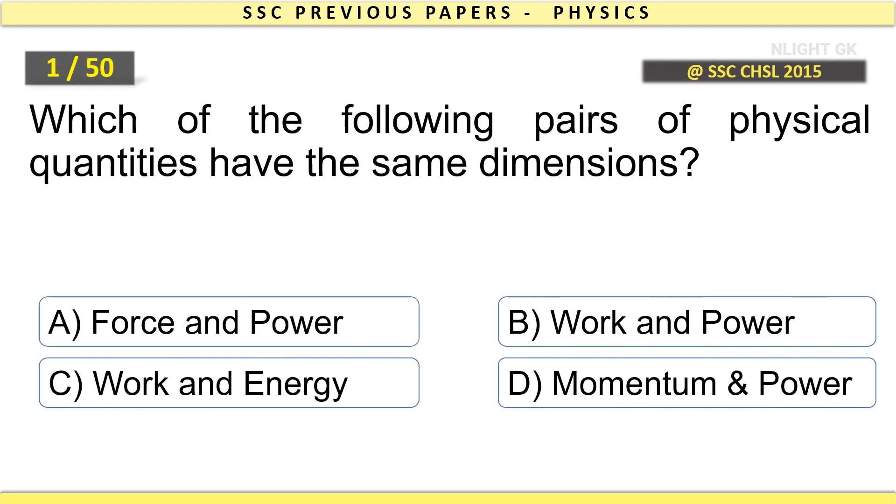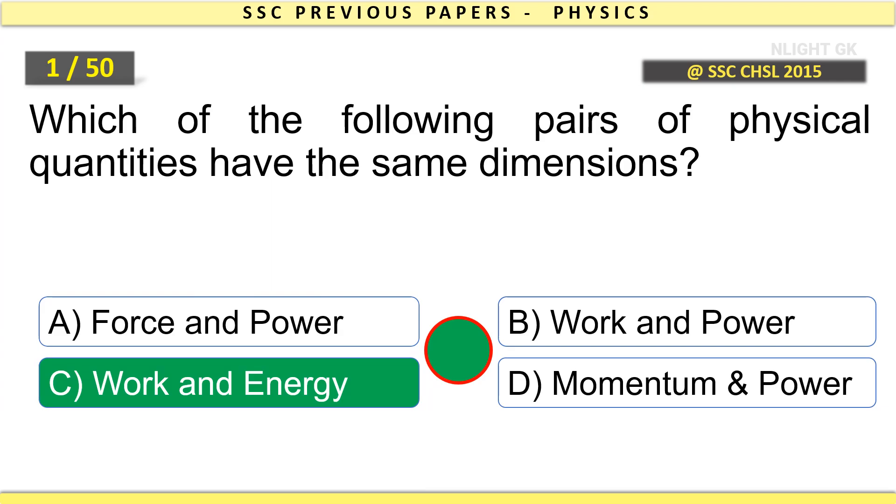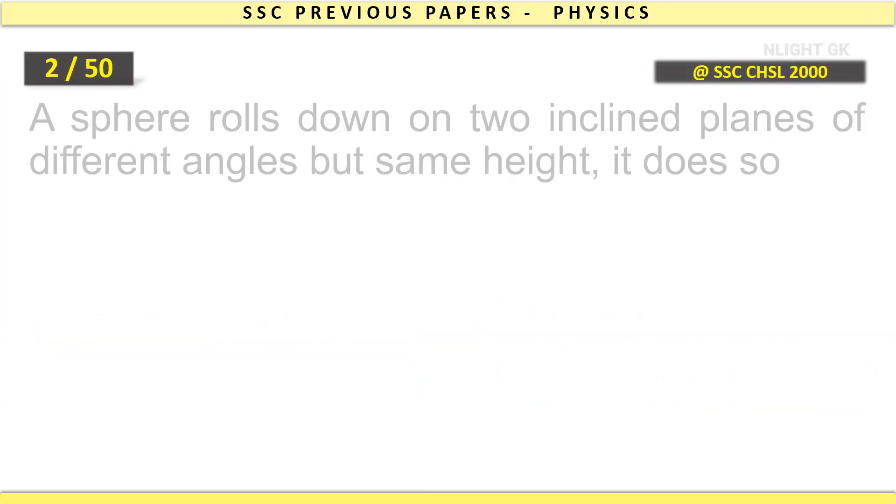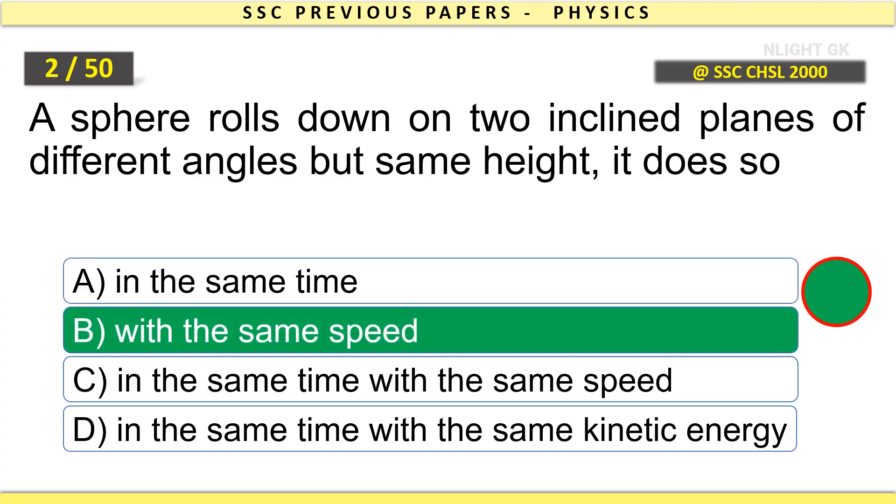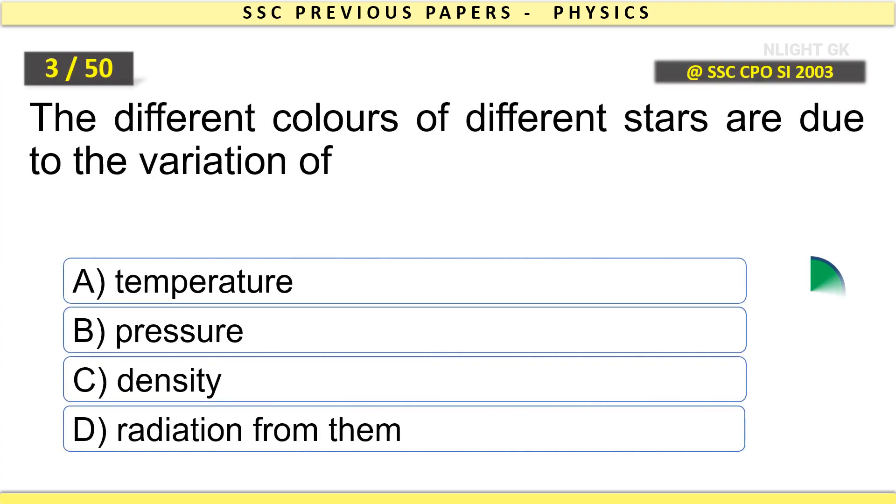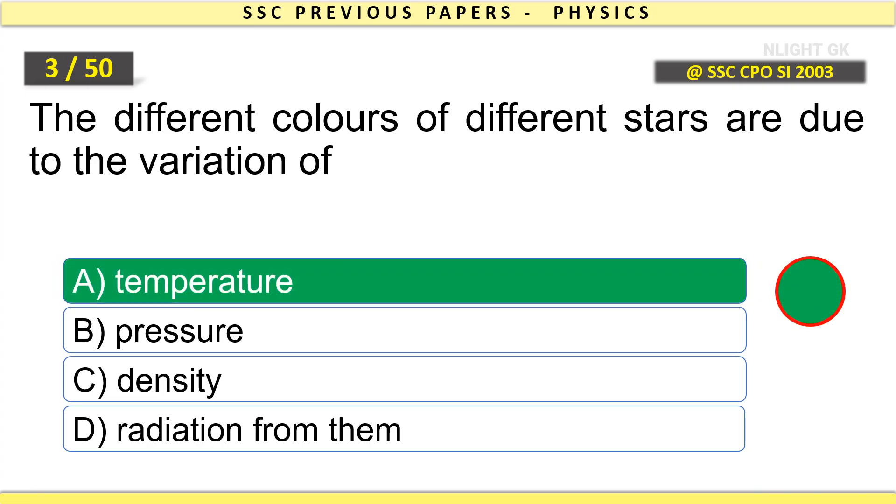Which of the following pairs of physical quantities have the same dimensions? Work and Energy. A sphere rolls down on two inclined planes of different angles but same height. It does so with the same speed. The different colors of different stars are due to the variation of temperature.